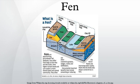A fen is one of the main types of wetland, the others being grassy marshes, forested swamps, and peaty bogs. Along with bogs, fens are a kind of mire.